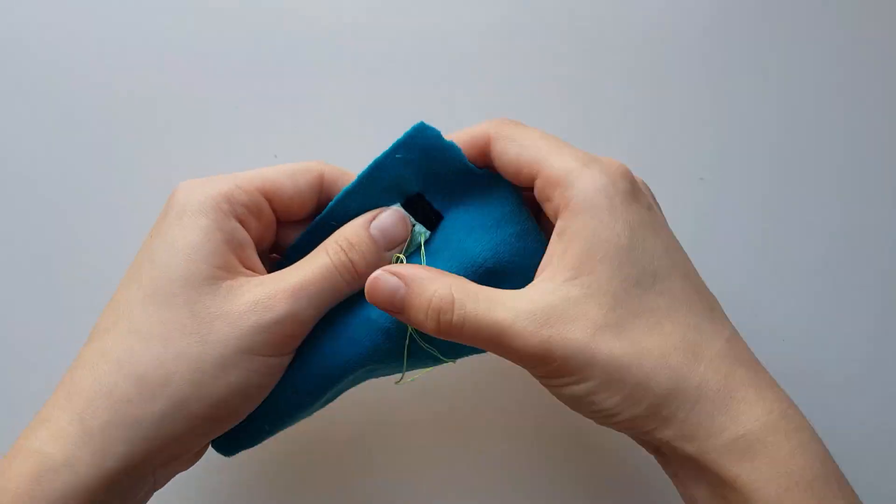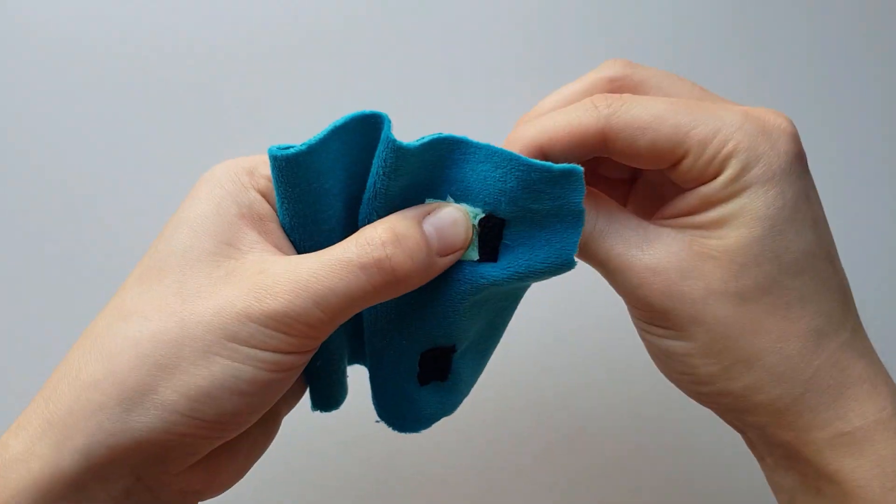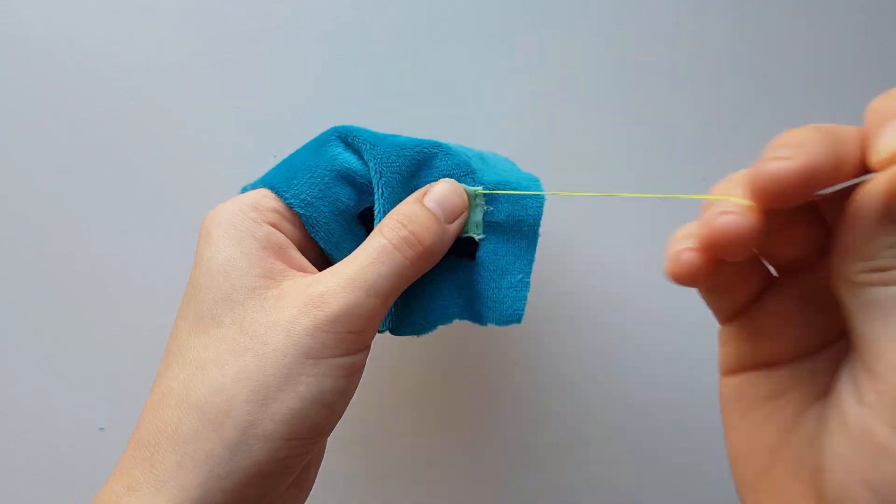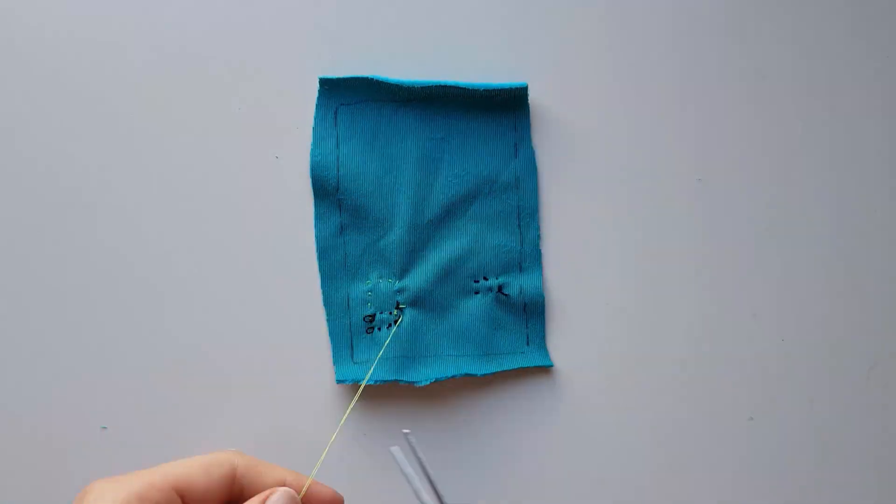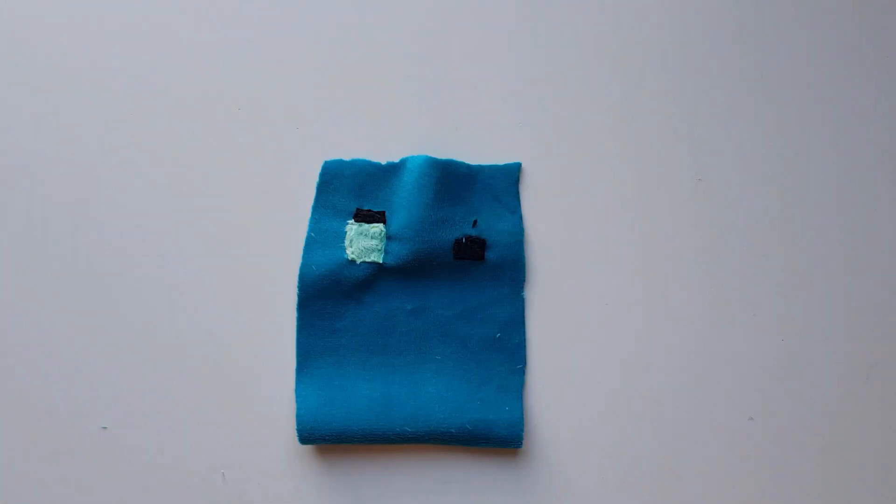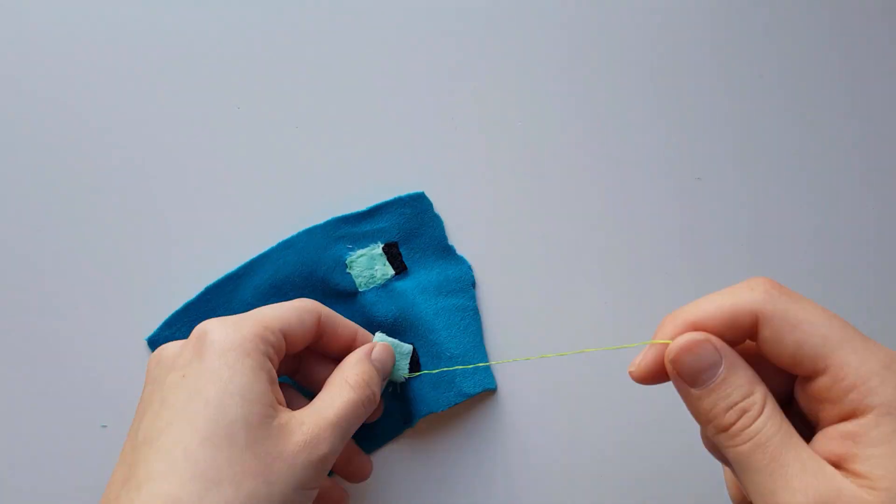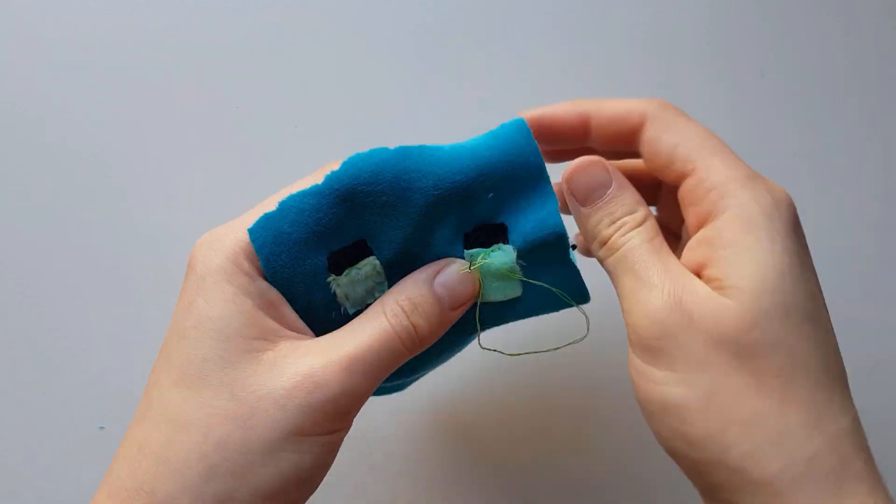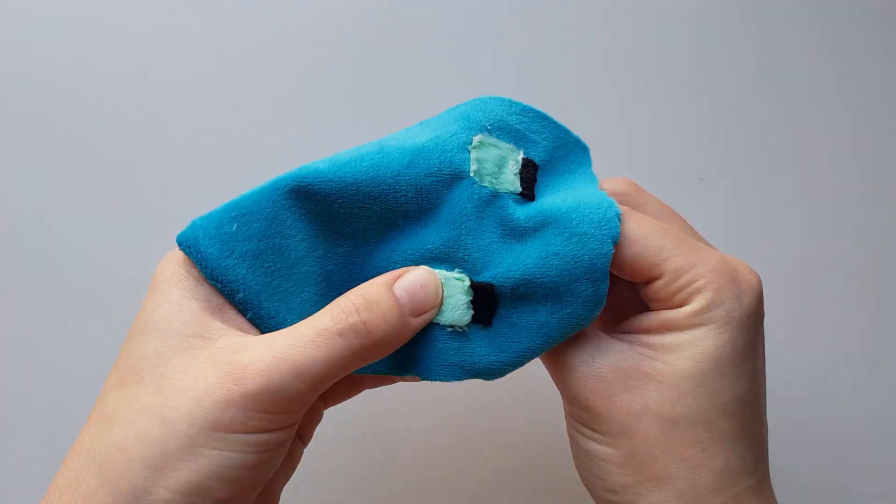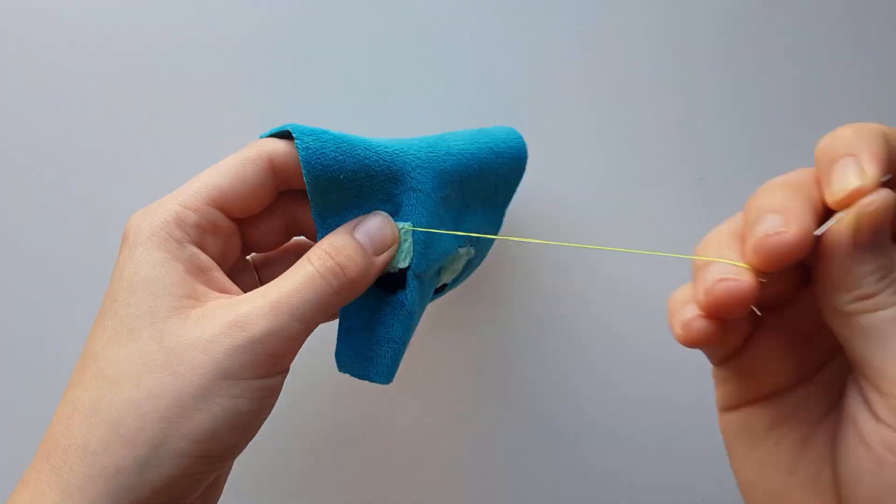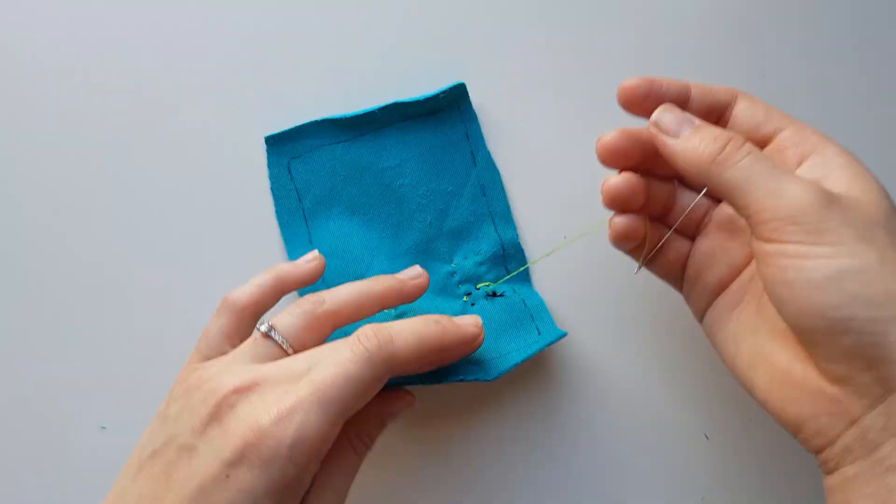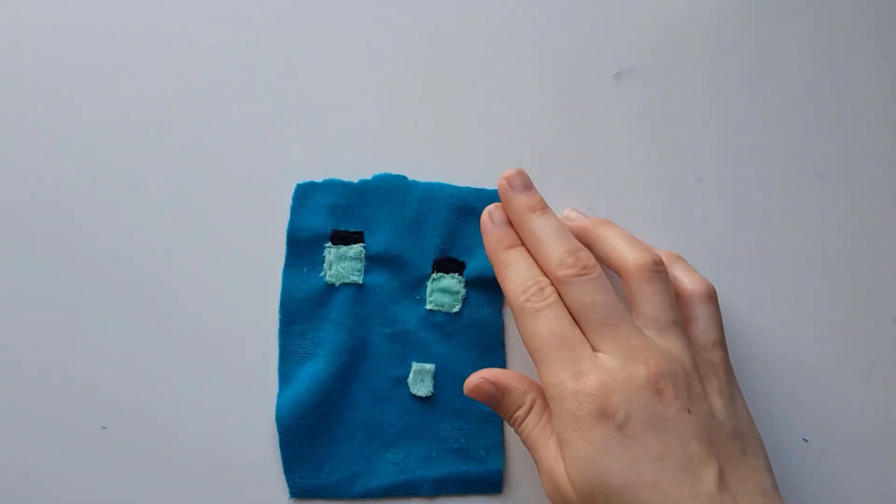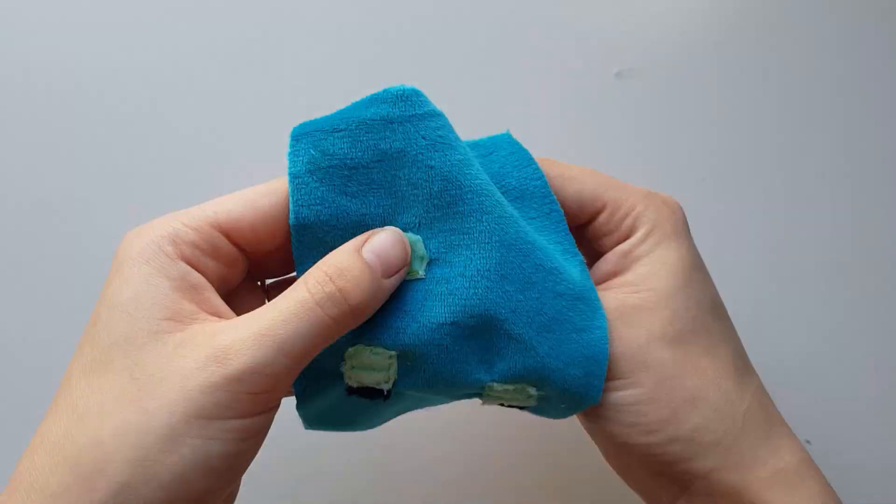Below the black eyes, sew on two teal squares so that you overlap the eyes slightly using a backstitch or a running stitch. Below this, sew on a small teal square.